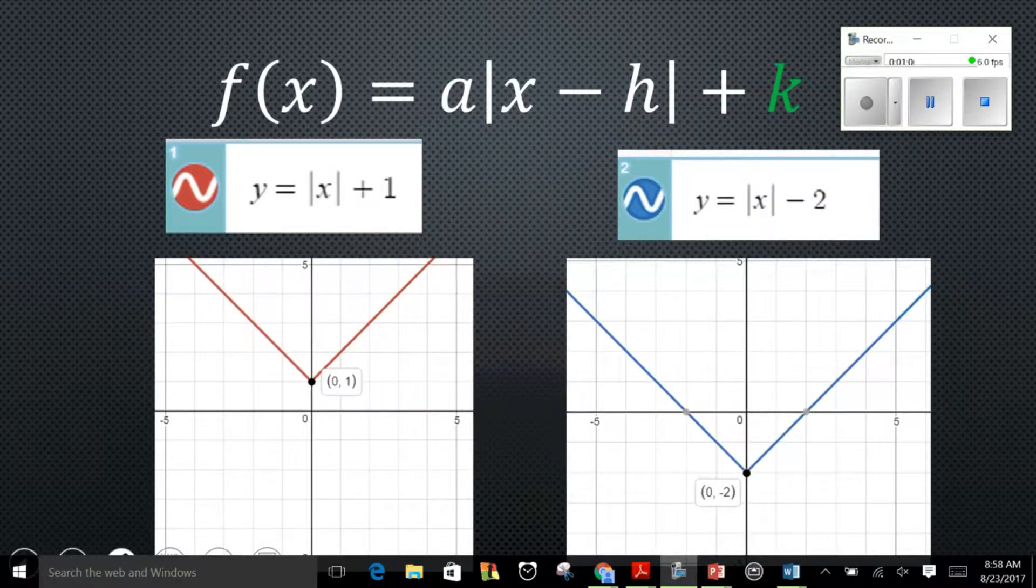Here are two examples of absolute value transformations dealing with the k value. The graph on the left has a plus 1 after the absolute value and that's going to shift the vertex from 0, 0 up to 0, 1. The second example is the absolute value of x minus 2, and that's going to move it down two units. So the new vertex will be at 0, negative 2.